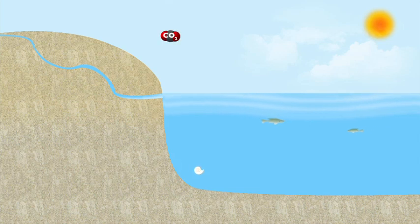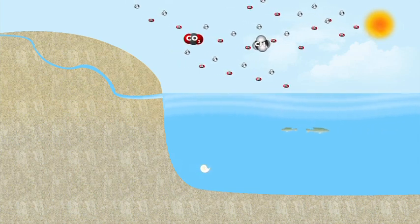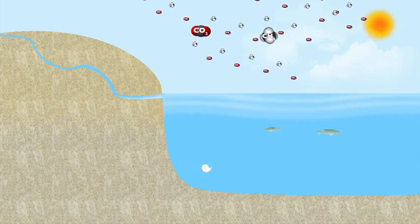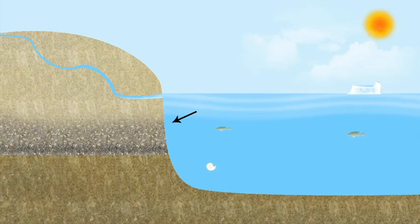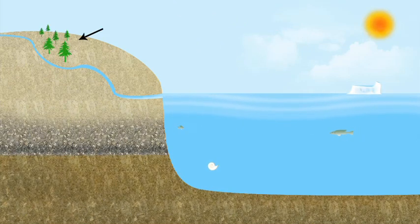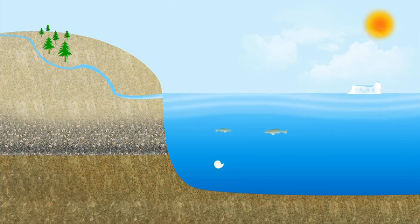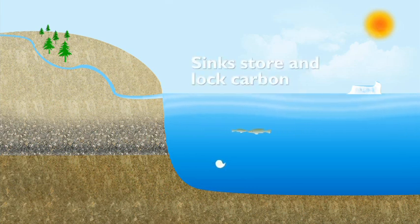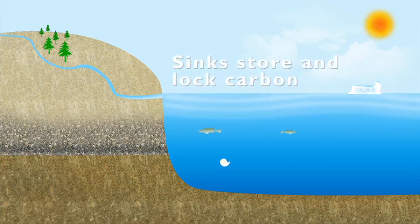When carbon dioxide, methane and other carbon-based molecules are released into the atmosphere, they can be taken up within ice, soils, forests and cold ocean water. These are called sinks — things that store and lock carbon away so that they no longer cycle through nature.